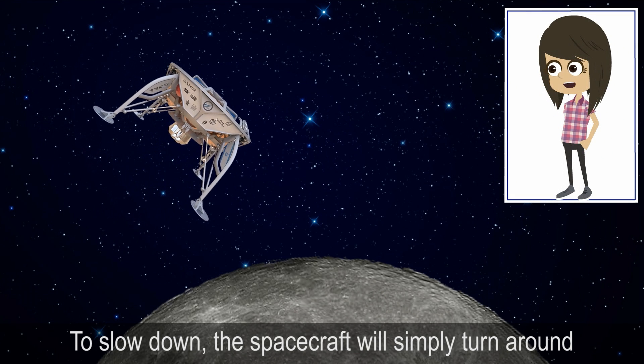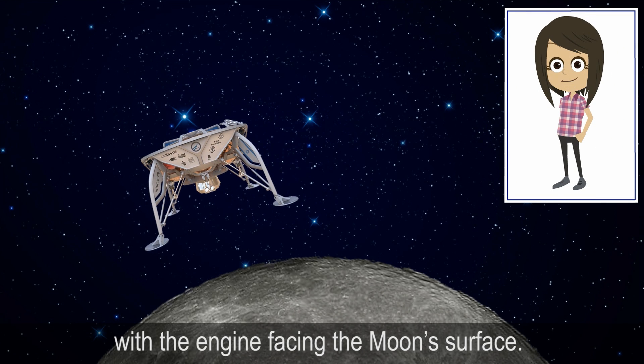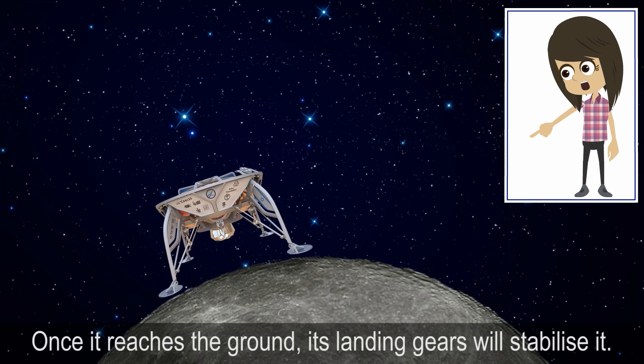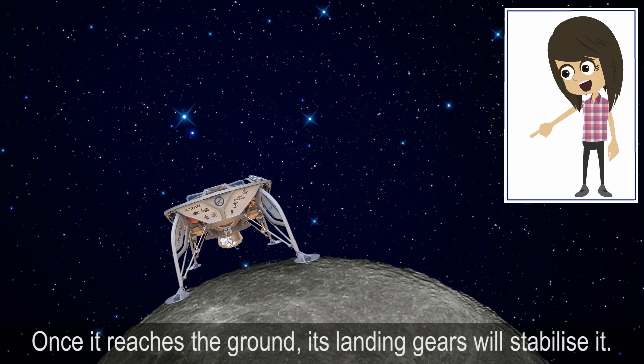To slow down, the spacecraft will simply turn around with the engine facing the moon's surface. Once it reaches the ground, its landing gears will stabilize it.